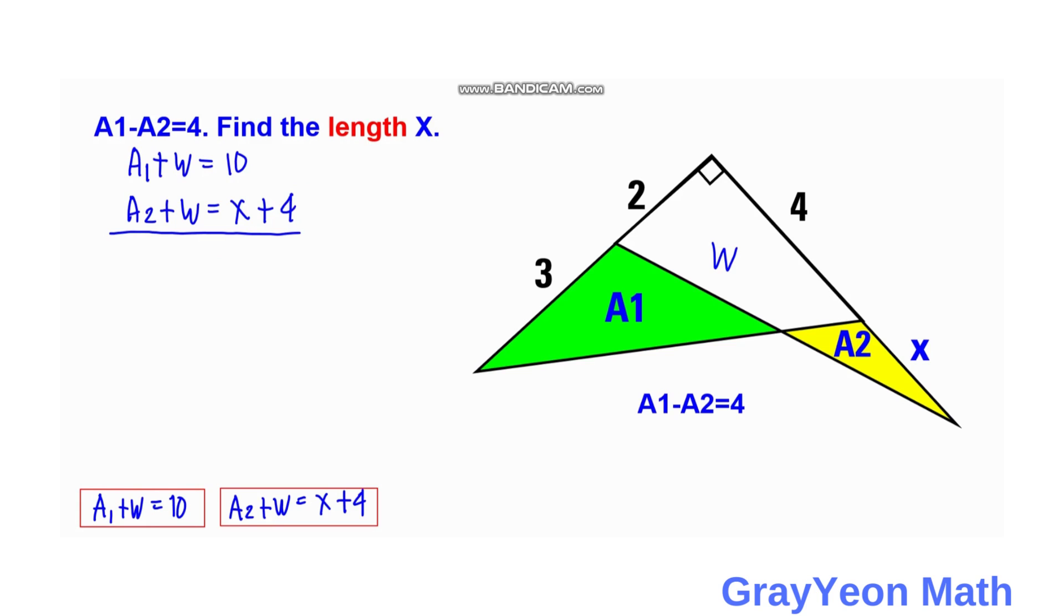Next, we use the two equations. We subtract the second equation from the first one. Area 1 minus Area 2, and the W cancels out, equals 10 minus X minus 4.